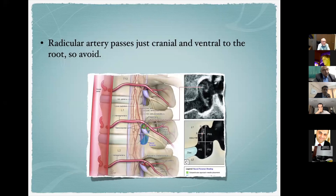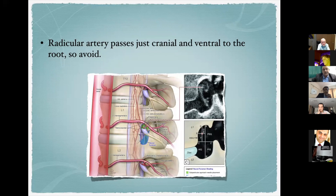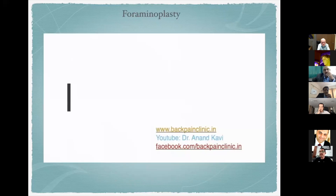Other approaches such as the interlaminar paraspinal approach (like PSLD para) have a drawback: the radicular artery passes just cranial or ventral to the root and cannot be avoided, requiring its sacrifice. We also encounter the C-shaped bony area between the transverse process and inferior articular process. In the transforaminal approach, we do not need to sacrifice that artery.